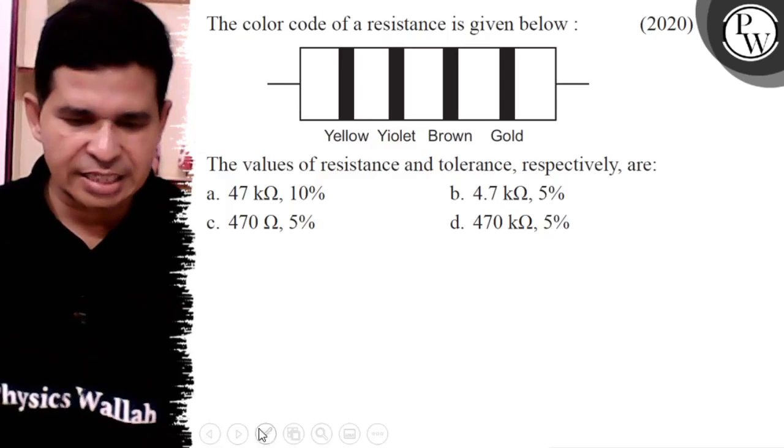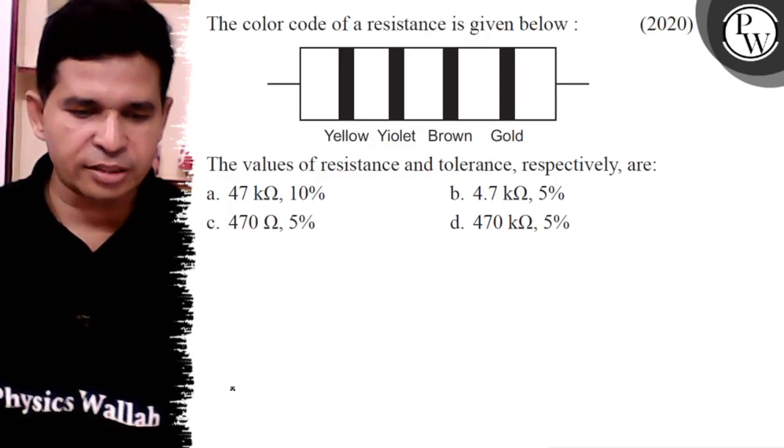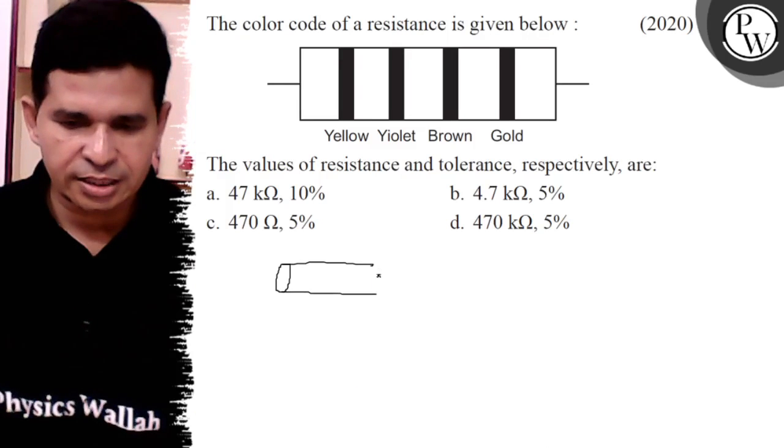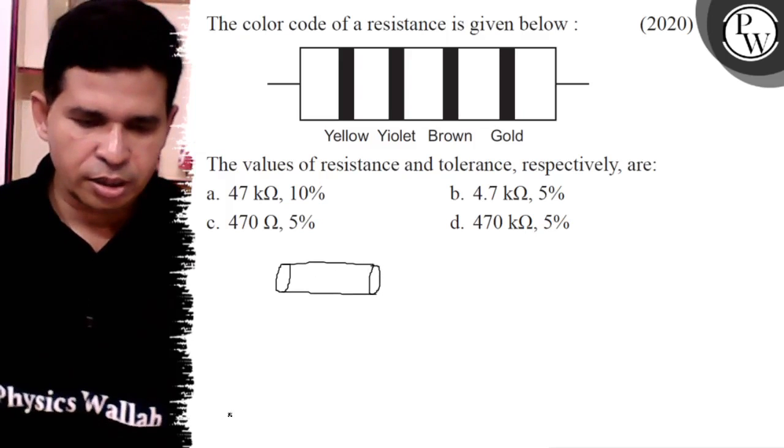We know that each and every carbon resistor have the four colorful rings. For example, it is the cylindrical resistance and it have the four colorful rings.